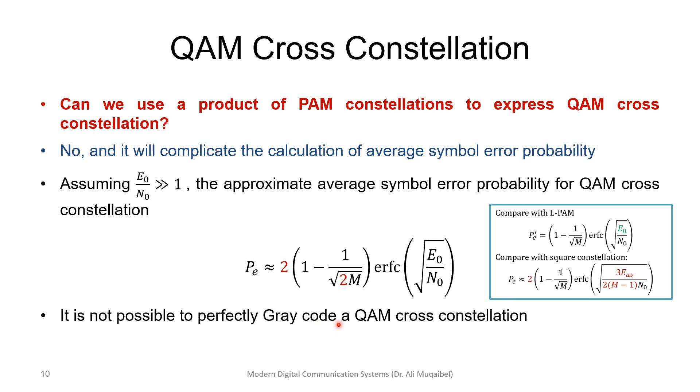We have summarized what QAM is. We looked at square and cross-constellation. We showed you the final result for the probability of error, and we showed how that is basically extension of the single base constellation for L-PAM.